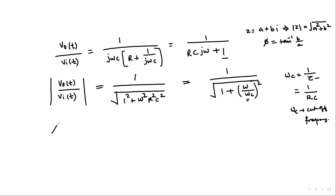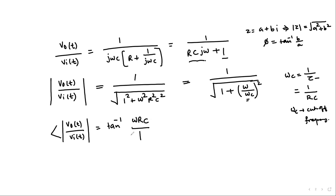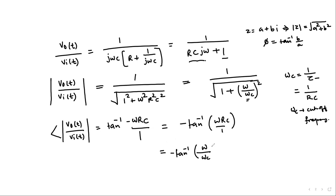Similarly, we can find the phase of V0(t) divided by Vi(t). Because we have j in the expression, the phase is minus tan inverse of ωRC over 1, which is minus tan inverse of ωRC. That can further be simplified as minus tan inverse of ω over ωc, since ωc equals 1 over RC.